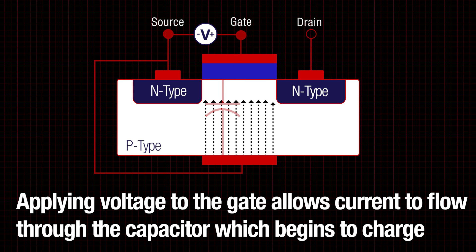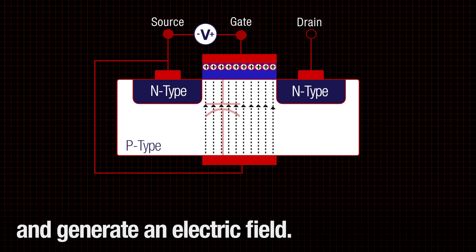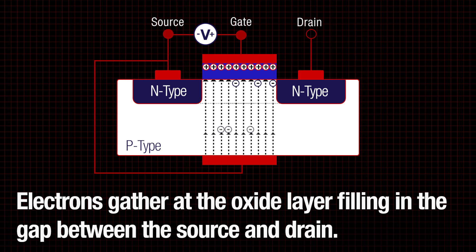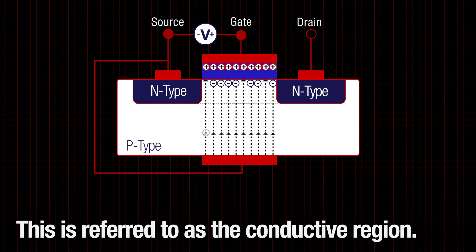Applying voltage to the gate allows current to flow through the capacitor which begins to charge and generate an electric field. This is the field effect part of the MOSFET term. Electrons gather at the oxide layer, filling in the gap between the source and drain. This is referred to as the conductive region.